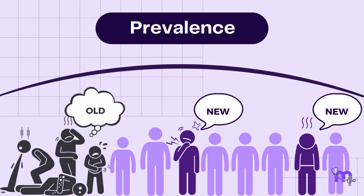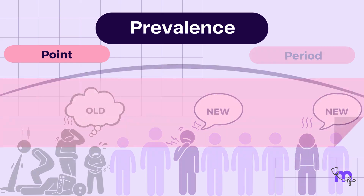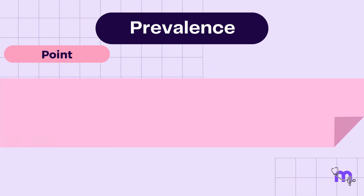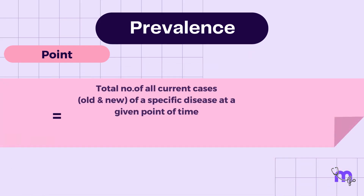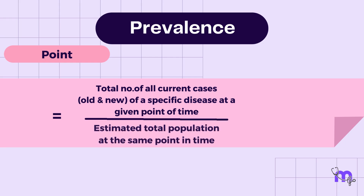Point prevalence can be calculated as: Total number of all current cases (old and new) of a specific disease at a given point in time, divided by the estimated total population at the same point in time, multiplied by 100.